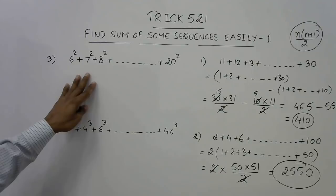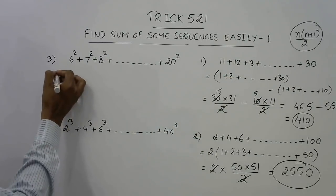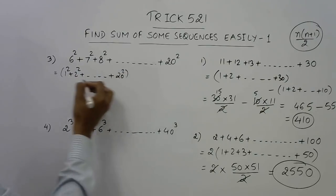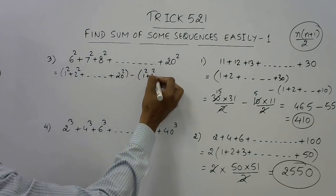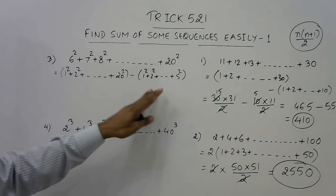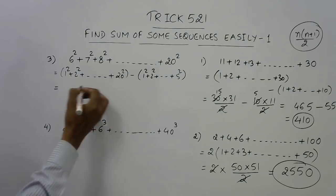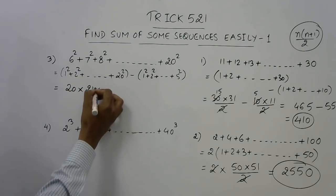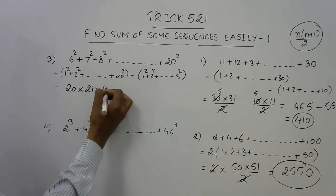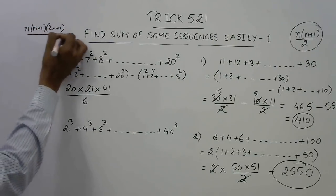Next we have the sum of squares. The squares from 1² to 5² are missing, so just like before I will introduce those terms — 1² + 2² up to 20² — and subtract the extra ones: 1² + 2² up to 5². Whatever I added I subtract, so it makes no difference. Now use the formula for finding the sum of squares of first n natural numbers: n(n+1)(2n+1)/6. For n = 20, write 20, then its consecutive 21, then double 20 gives 40, plus 1 gives 41, divided by 6.